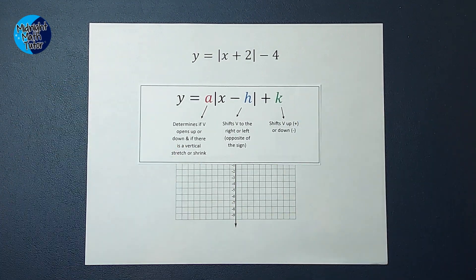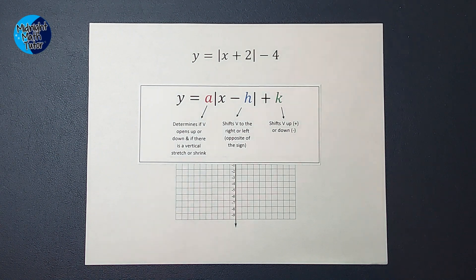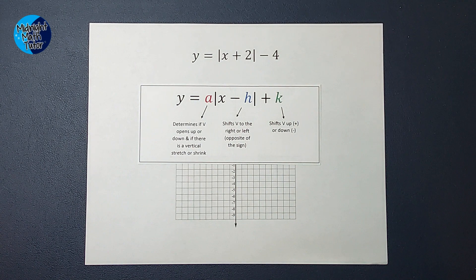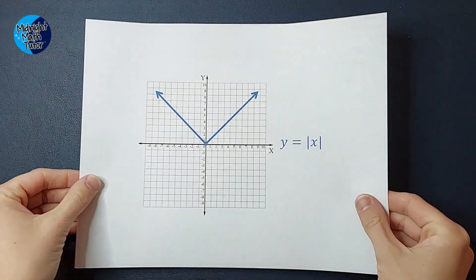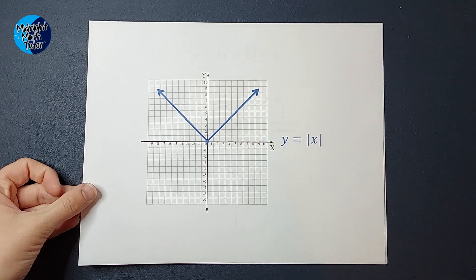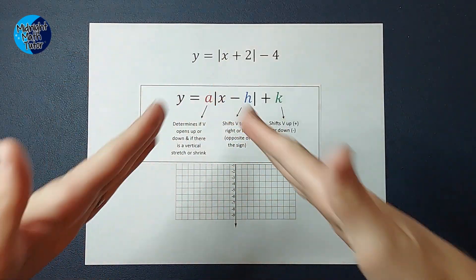So looking at this, if you have a number out front, in this case we don't, or it's technically a one. If you want to see an example where we do have one out front, I will link a video from the corner, but that number, if that number is positive, my graph is going to open up. When we graph absolute value, it's a V shape. So if it's positive, it's going to open up. If it's negative, it's going to open down, like an upside down V.